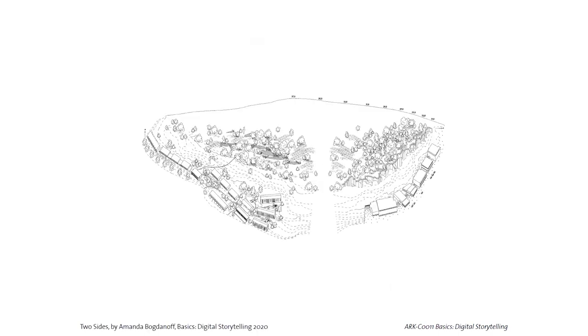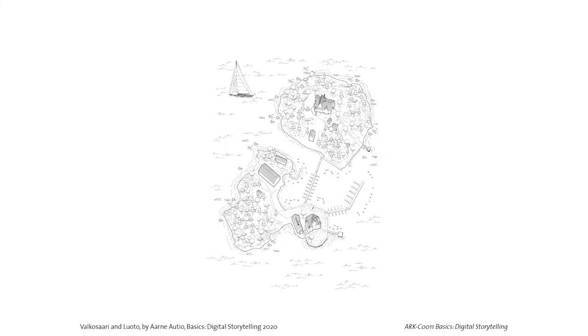The final section: last year's students working at the large landscape scale, drawing parks and archipelago. Many students were inspired by the Helsinki archipelago. This drawing, The Two Sides, shows Valkosaari in Luoto. There would be a boat — though I think the boat might be in a slightly wrong scale relative to the building.